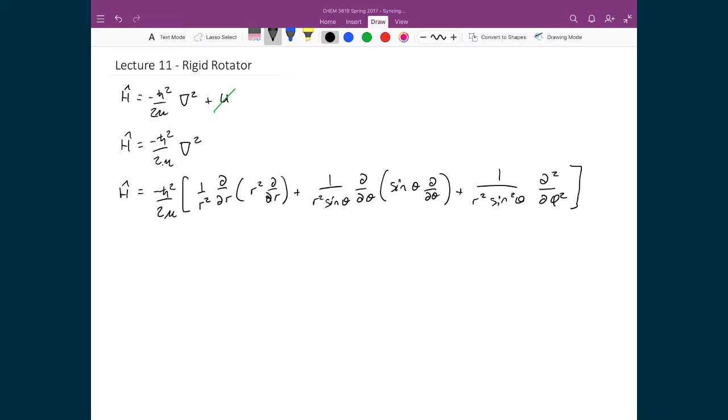Now in this case, remember we're dealing with something where it's called the rigid rotator. And so the rigidness comes in from the fact that we have essentially a dumbbell that's going to be spinning in space. And so this distance between these two atoms is going to be set to be equal to r, and it's some fixed value, hence the term rigid rotator.